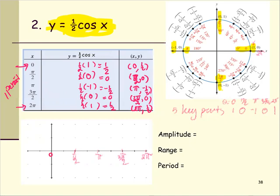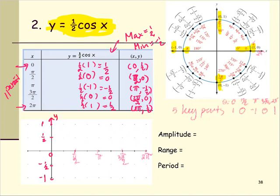The maximum value of the graph is one half and the minimum is negative one half. We mark the increments on the vertical axis: one half, one, negative one half, and negative one. The y-axis is vertical and the x-axis is horizontal.